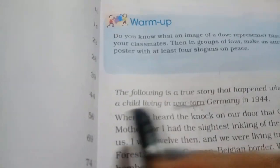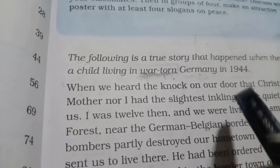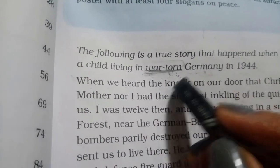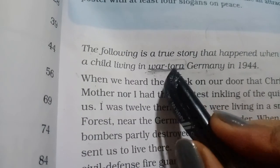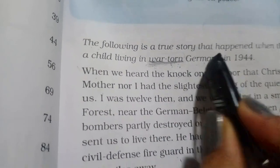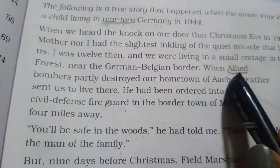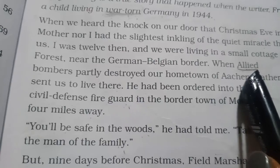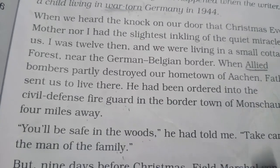Starting from the first page, in the first paragraph, second line, the word Warton is here. The meaning of Warton is used for a place which is very badly harmed or damaged. The next word I underlined is allied.